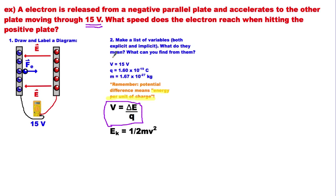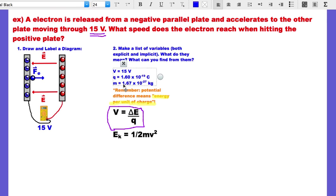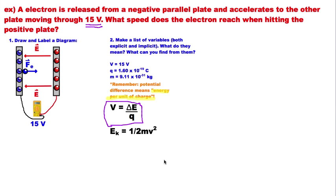So I make a list of all the variables I'm given in the question. I've got the potential difference. And then I also know the charge and mass of this particle. The charge is 1.6 times 10 to the negative 19 coulombs, that's the elementary charge. And the mass is 9.11 times 10 to the negative 31 kilograms, that's the mass of an electron. Those are both in your data sheet, so you can look those up when you need to.